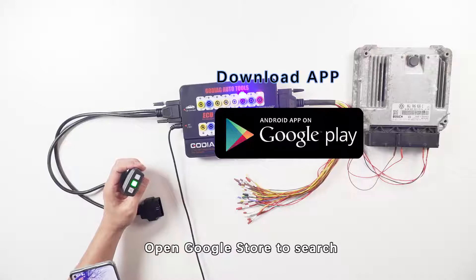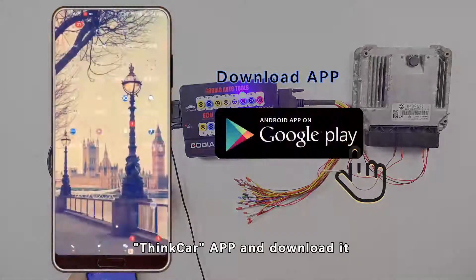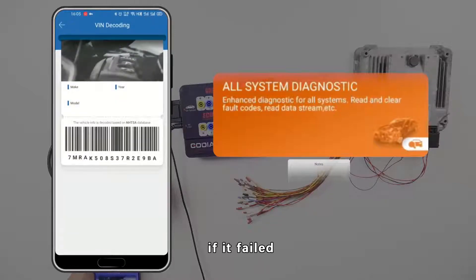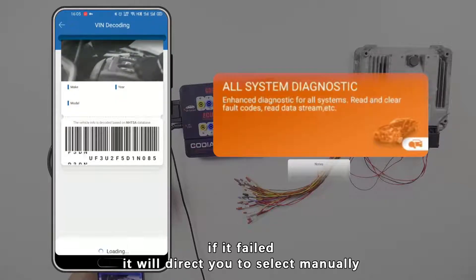Open Google Store to search Syncar app and download it. Auto-detect VIN. If it failed, it will direct you to select manually.